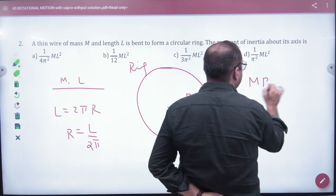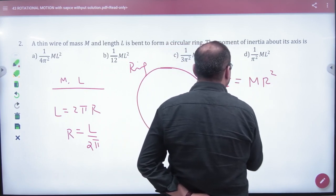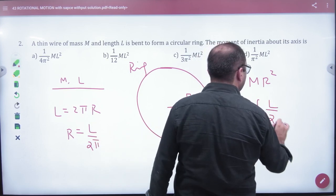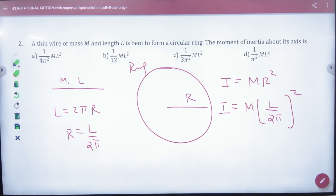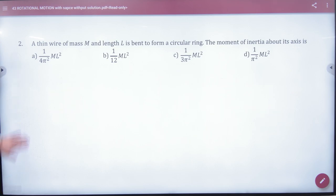What will be the moment of inertia? It will be MR². And the value here is L/2π squared. It looks like ML²/4π² answer. The 4π² answer is correct because circumference has been converted, so I think the answer is correct.